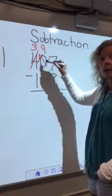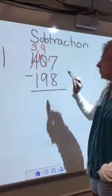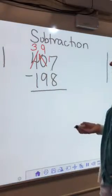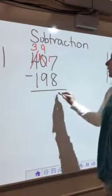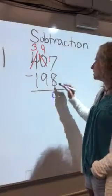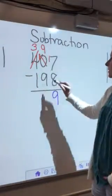So now I've got seventeen minus eight. Can I do that one? It's a quick quiz problem. I hope you can. Seventeen minus eight is nine. Nine minus nine is zero.